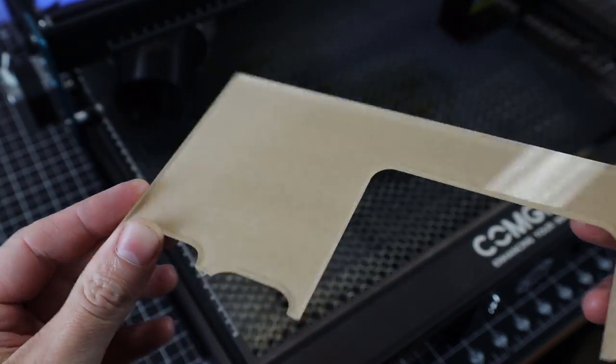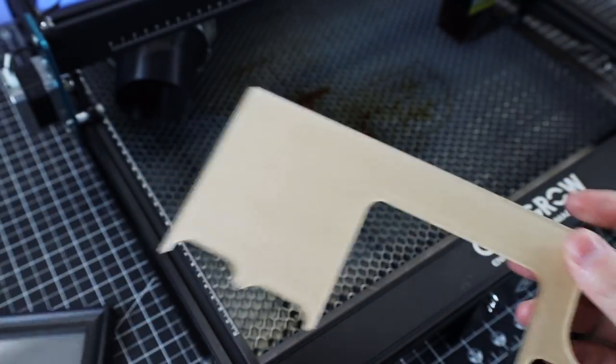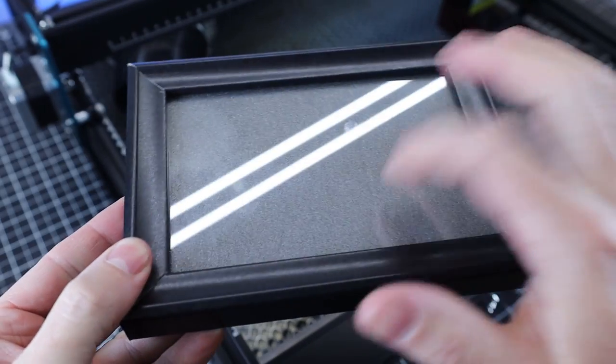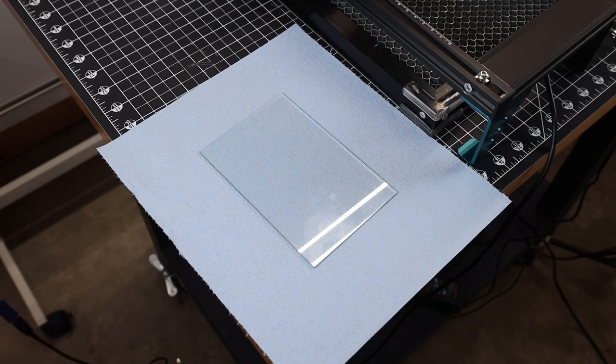So you can't cut anything that is clear, like this clear acrylic, but you can engrave into clear things if you put a mask on it. And to show you how to do that, I'm going to actually use the glass from this picture frame. So with the glass removed,